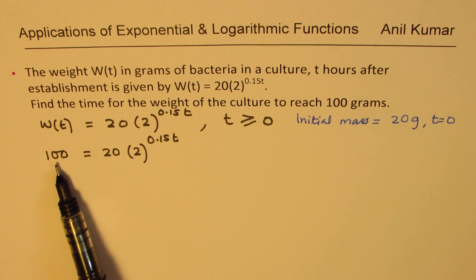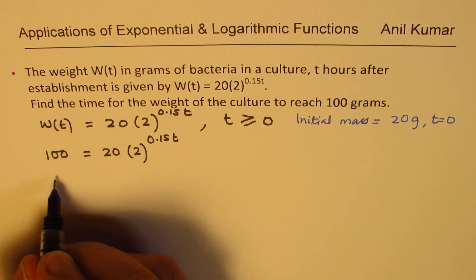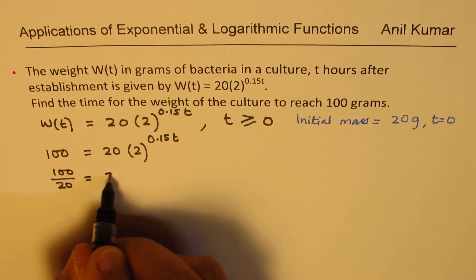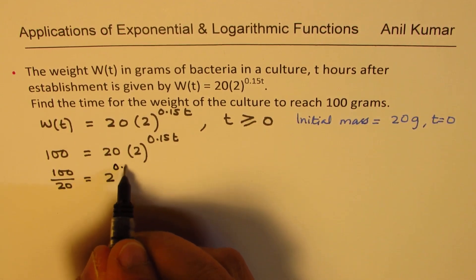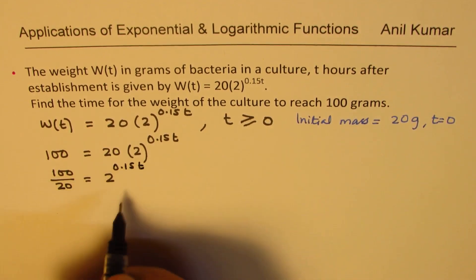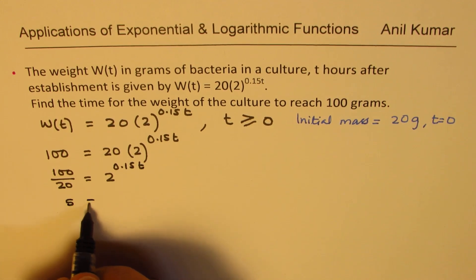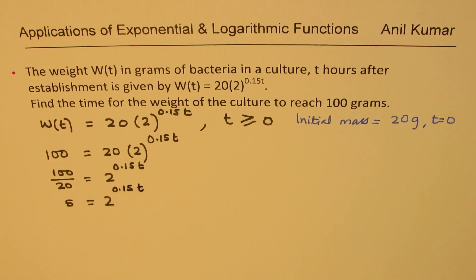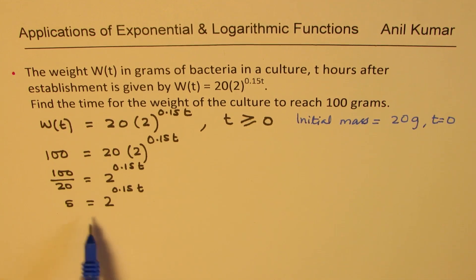Let's see how to do it. The first step should be dividing by 20. So we get 100 divided by 20 equals 2 to the power of 0.15t. This gives us 5 equals 2 to the power of 0.15t. Now how do we find t? At this stage, we need to take log on both sides.